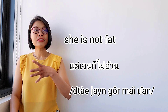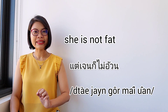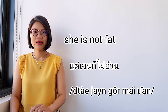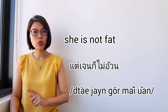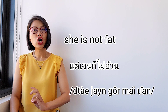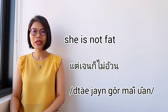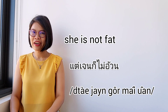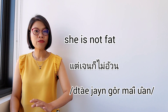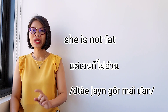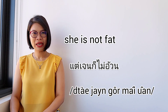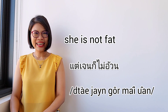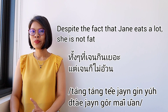When you use ทั้งทั้งที่ in the second clause, you have the option to say แต่ก้อ — it's optional but Thai people normally like to say it together. แต่เจนก้อไม่อวน — อ้วน (uan) means 'fat' in terms of size. Because it's an adjective in Thai, you don't need a verb 'to be.' When you want to make it negative, 'not fat,' say ไม่อวน. Full sentence: ทั้งทั้งที่เจนกินเยอะ แต่เจนก้อไม่อวน.